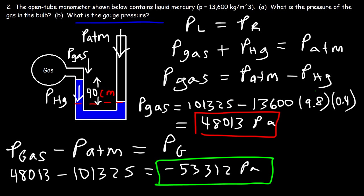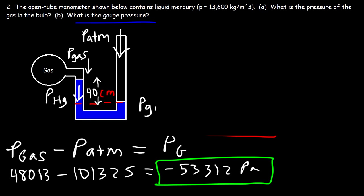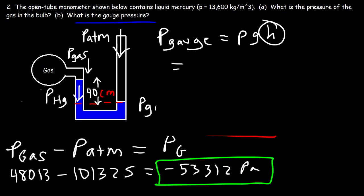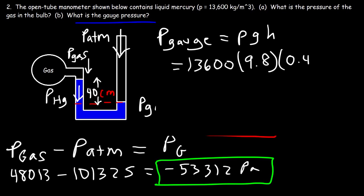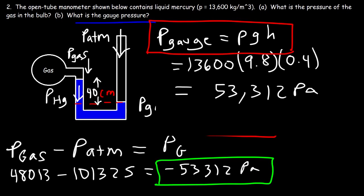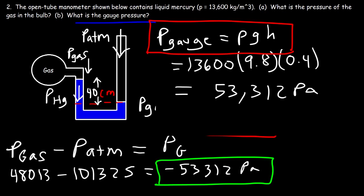You need to be careful when using this equation. The gauge pressure can be found using rho·g·h; however, you need to know when the height is positive and when it is negative. If you just plug in 13,600 times 9.8 times 0.4 meters, you'll get the same magnitude but not with the appropriate sign. So be careful — you'll get the right number, but if the sign matters, use the subtraction method instead. Remember, to calculate gauge pressure you're comparing the pressure of the substance, in this case the gas, with respect to atmospheric pressure.